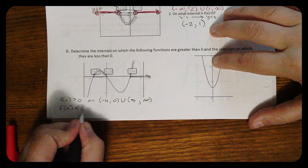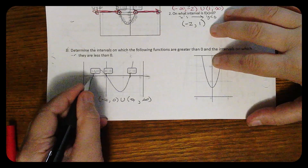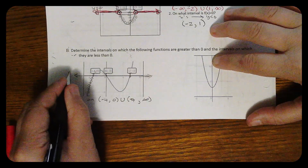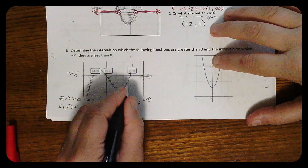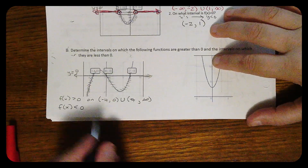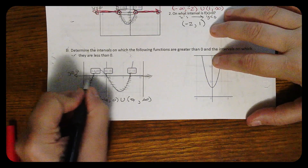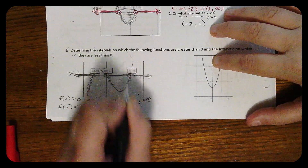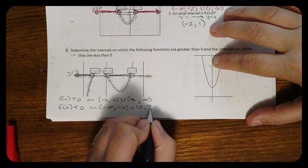Where is f(x) less than 0? That happens when the y's are below the x-axis, because that's where y equals 0. Those y-values are negative, so we locate the x-values that make that happen: from negative infinity to negative 4, union 0 to 7.